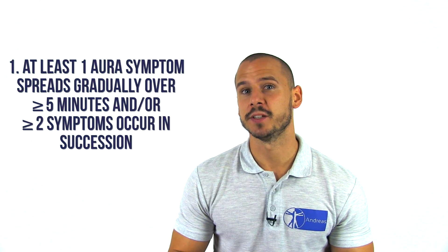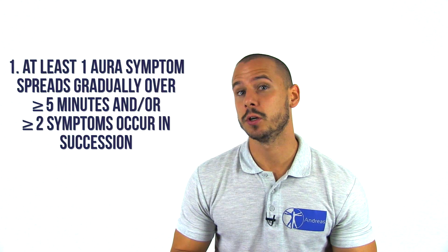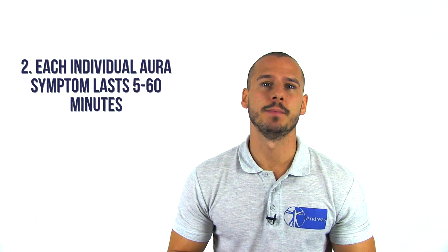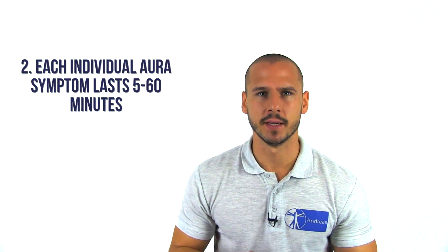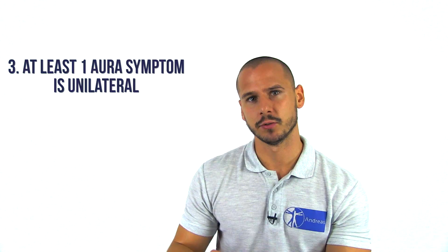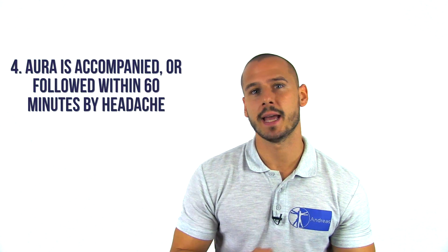Imagine vision changes, numbness, dizziness, confusion, etc. Furthermore, at least two of the four characteristics have to apply. One: at least one aura symptom spreads gradually over more than five minutes and/or two or more symptoms occur in succession. Two: each individual aura symptom lasts between 5 to 60 minutes. Three: at least one aura symptom is unilateral. And four: the aura is accompanied or followed within 60 minutes by headache.